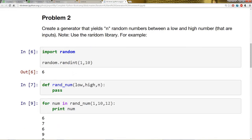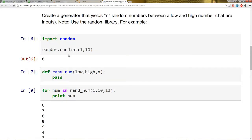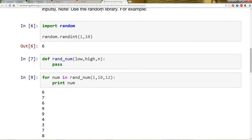Problem two, I want you to create a generator that yields n random numbers between a low and a high number that are inputs. So I made a note to use the random library, and you can do that by this line right here, import random.